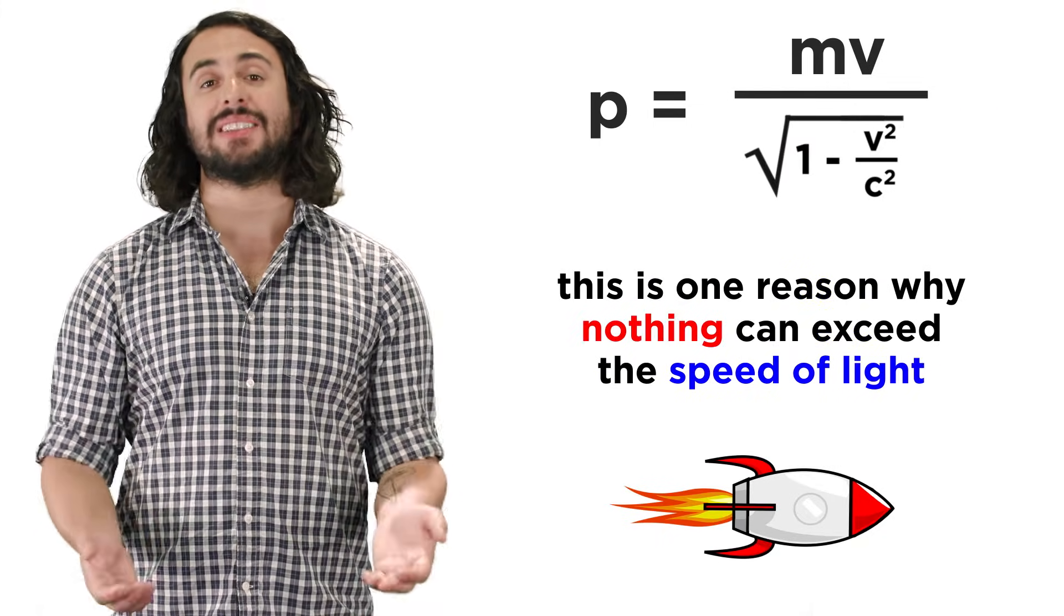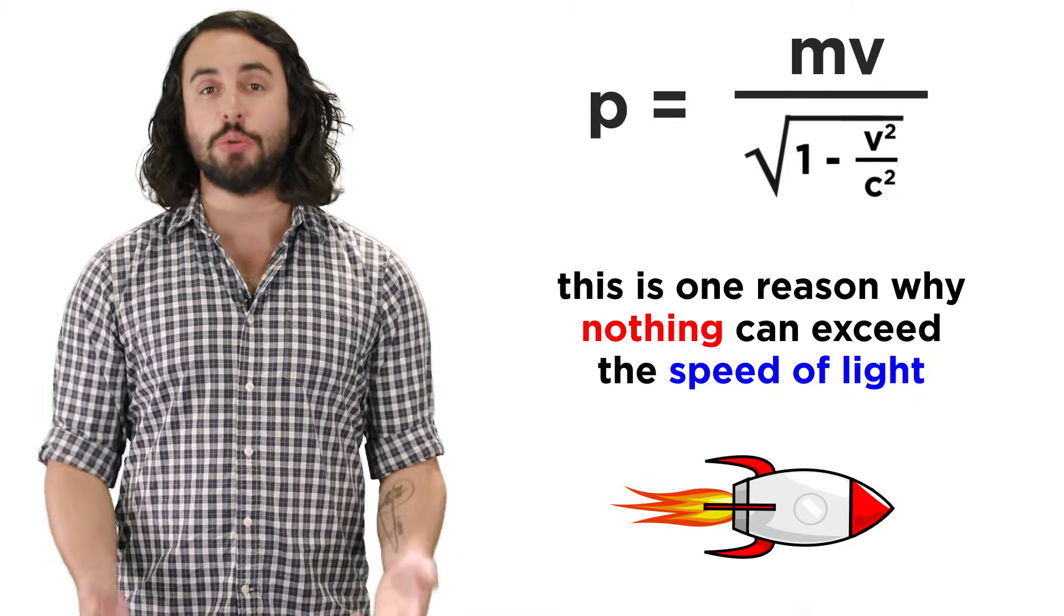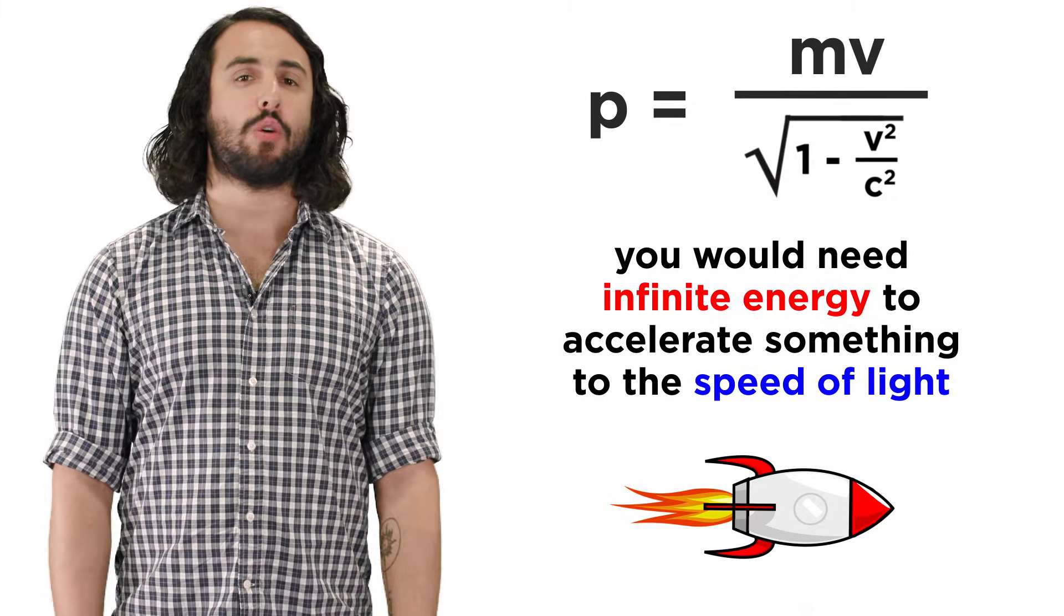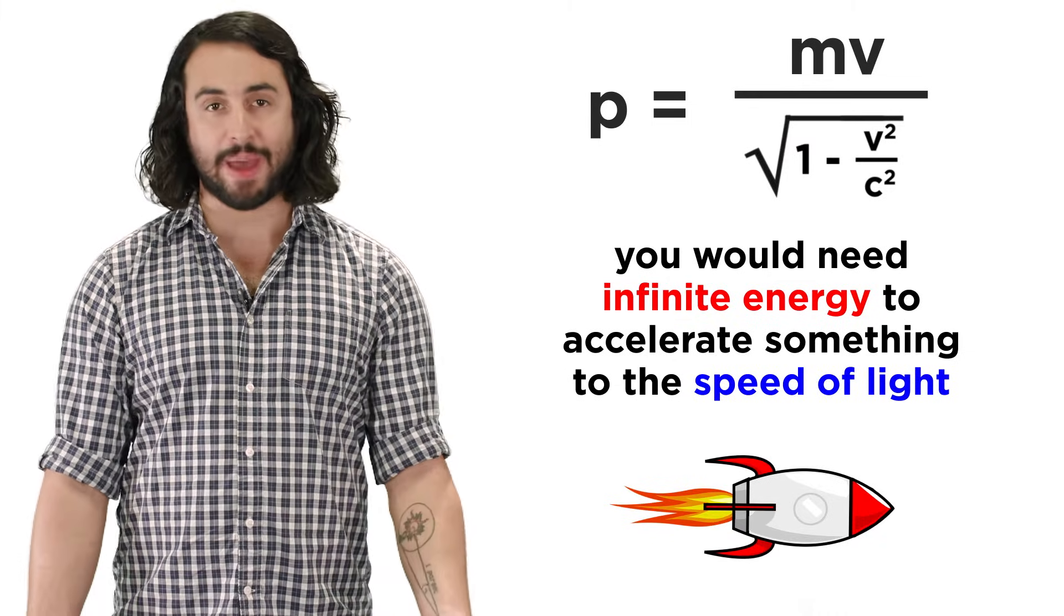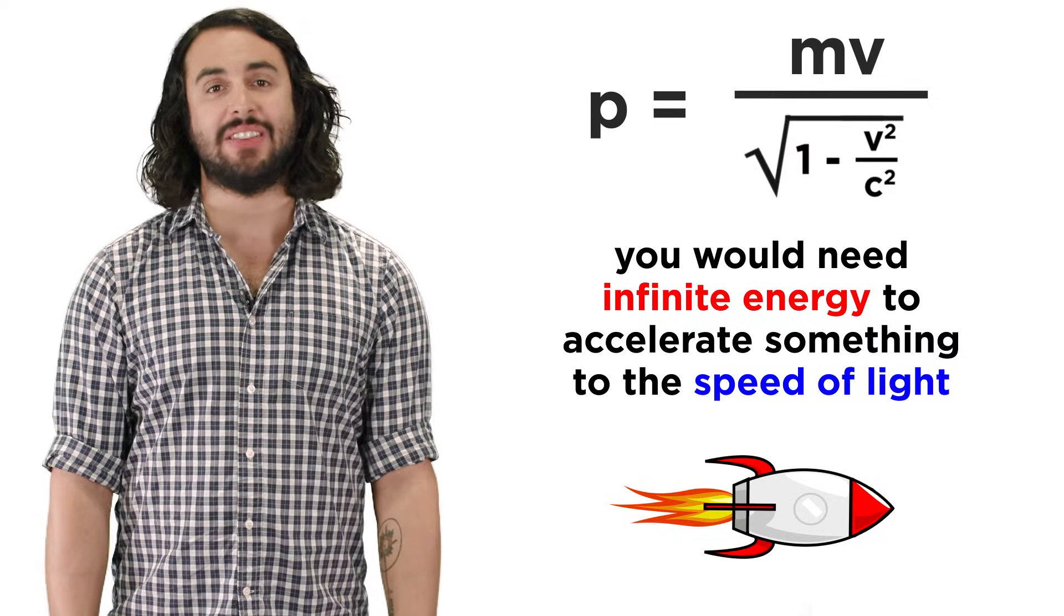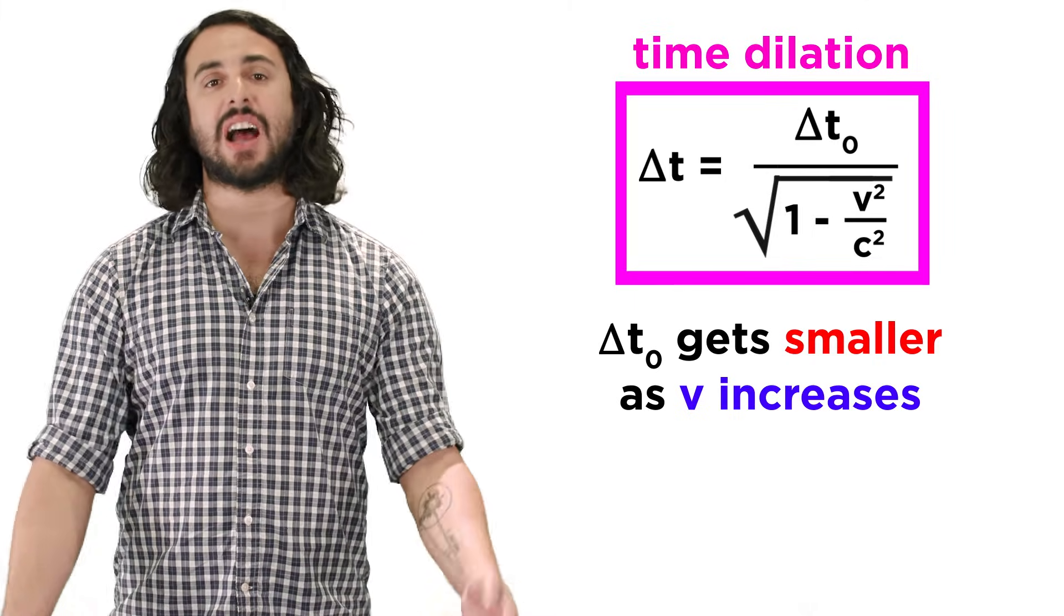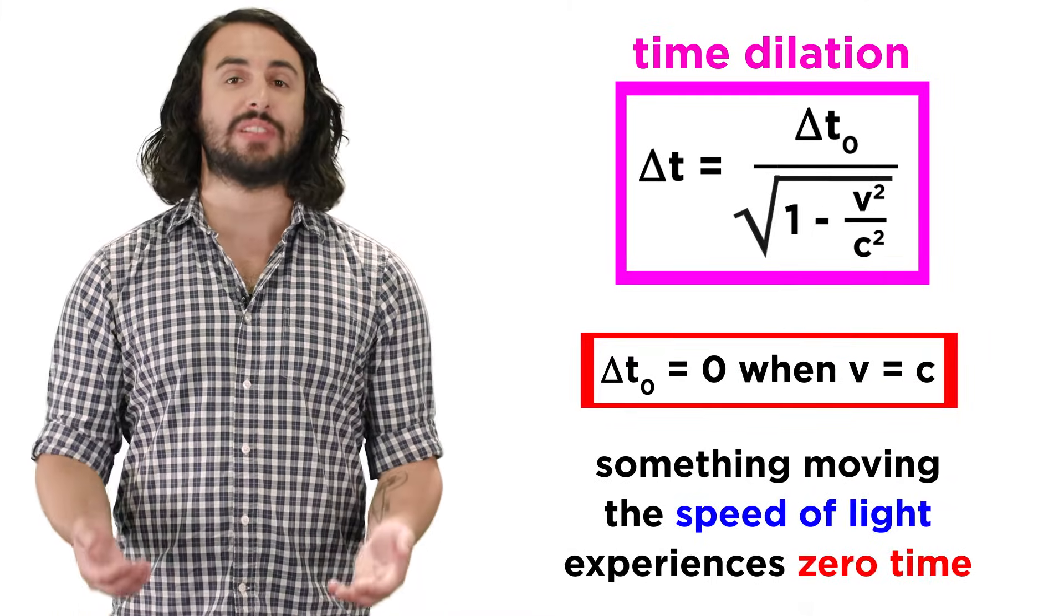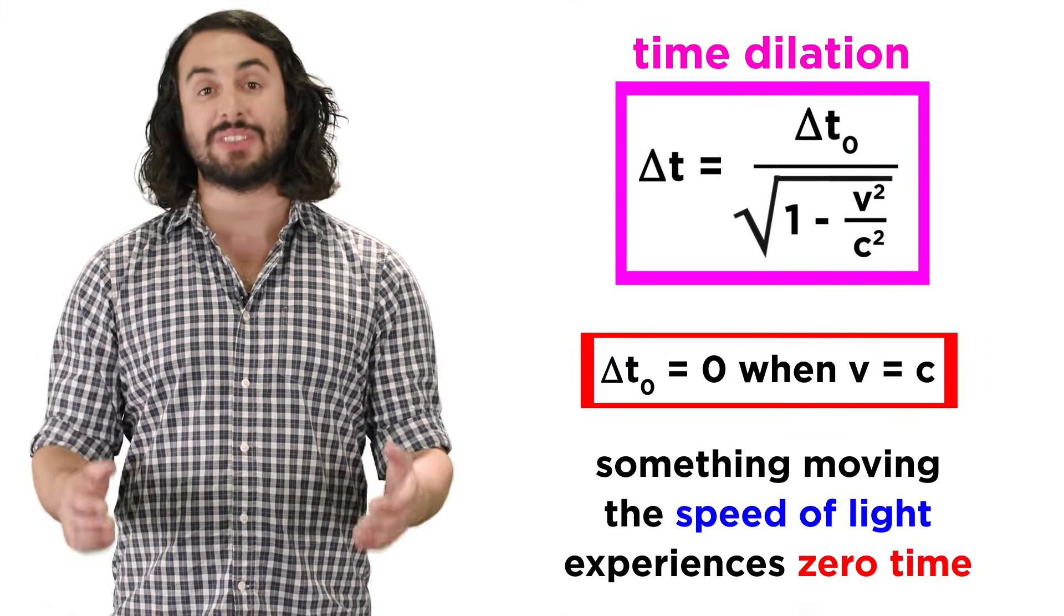This gives us possibly the best explanation for why the speed of light truly is the universal speed limit, because it would require literally infinite energy to accelerate anything with mass to the speed of light. We can find similar logic in the other equations as well. With time dilation, we can see that time slows down as you go faster, with the limit of something moving the speed of light experiencing zero time.